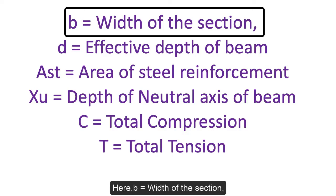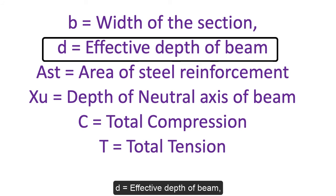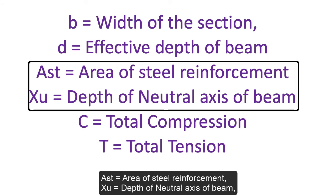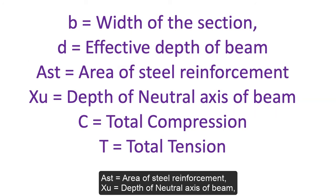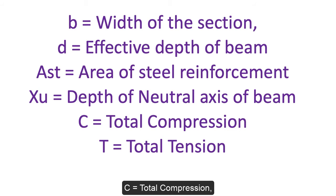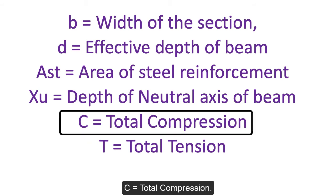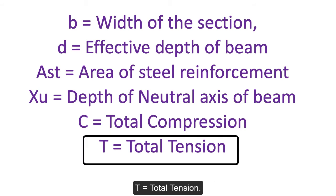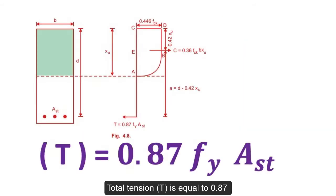Here, b equals width of the section, d equals effective depth of beam, A_st equals area of steel reinforcement, x_u equals depth of neutral axis of beam, C equals total compression, and T equals total tension.